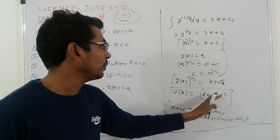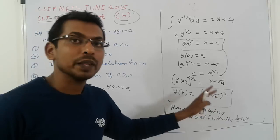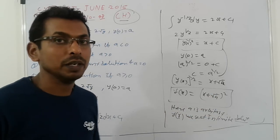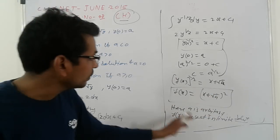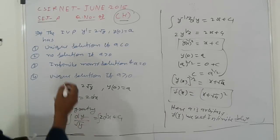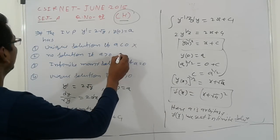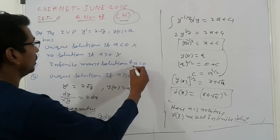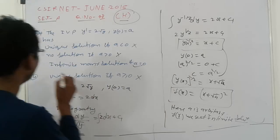The boundary condition is y(0) = a but a is not given, so that case we get infinite solutions. Not unique solution, not no solution - infinite many solutions.